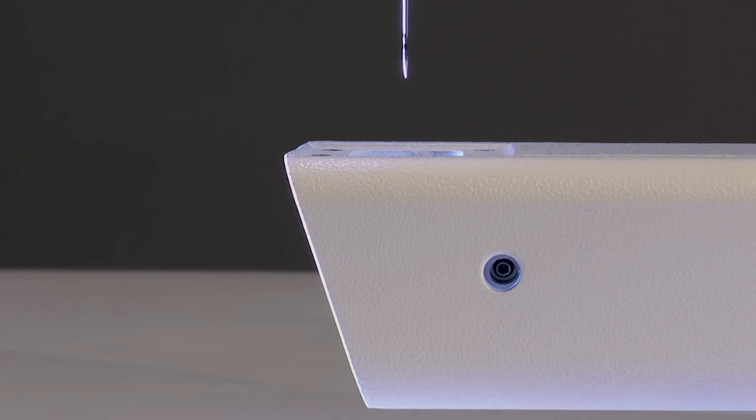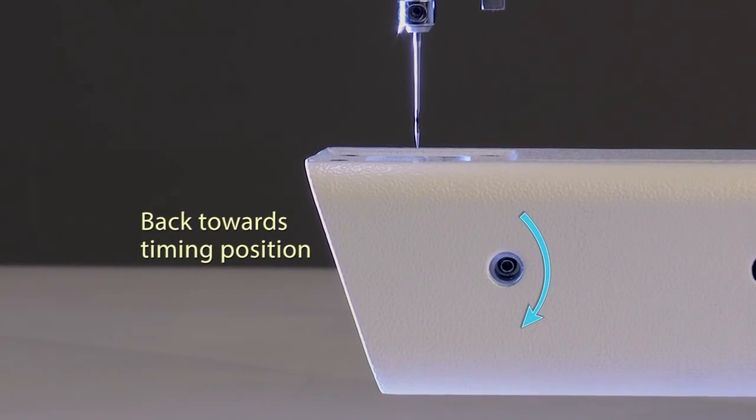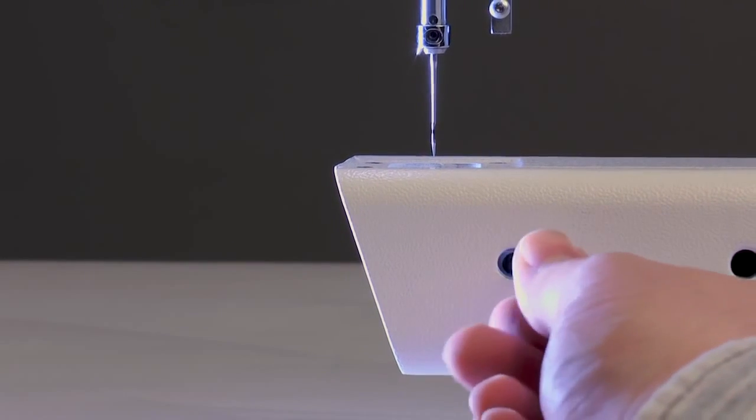After the first set screw is loosened, rotate the hand wheel back towards the correct needle position until the second screw is visible. Now loosen the second set screw.